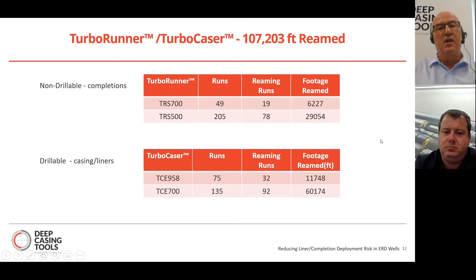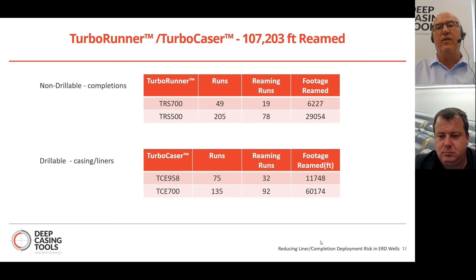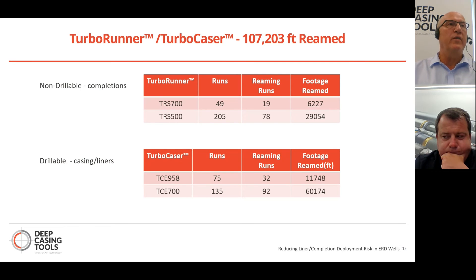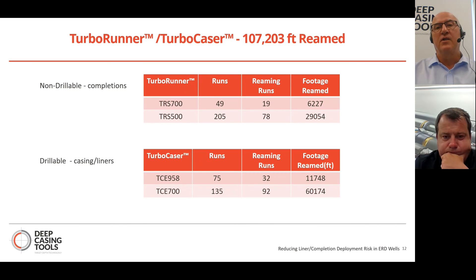We've had to operate the Turbo Runner to get completions to TD on many occasions, with over 35,000 feet of footage reamed. Approximately 40% of the time when we've picked up our Turbo Runners, we've had to activate them to get completions to TD. The Turbo Caser — our drillable turbine-powered reaming shoe — has 210 runs in our database, with 124 jobs where we had to ream to get casing or liners to target depth. That's about a 60% activation rate, and we have over 107,000 feet of reaming carried out over the last 11 years.